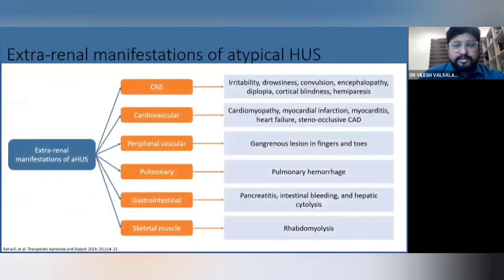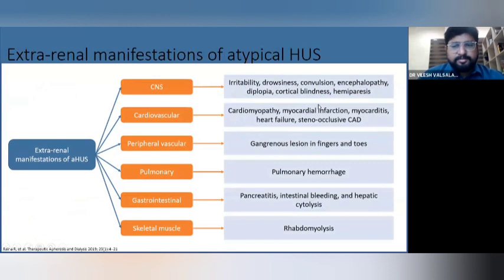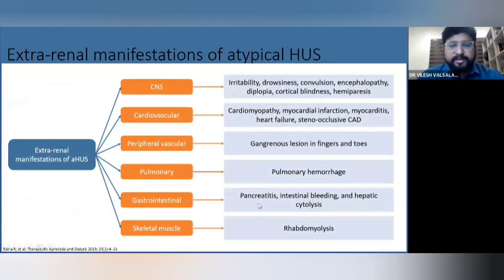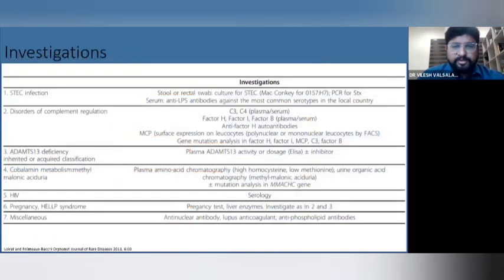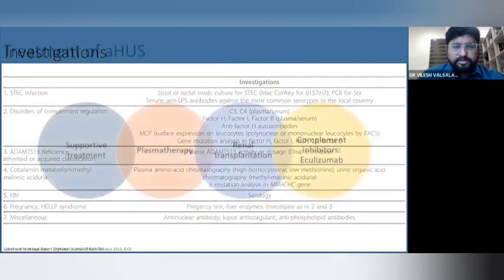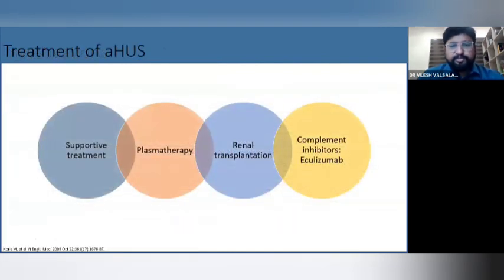Extra-renal manifestations in atypical HUS include neurological symptoms of irritability, drowsiness, convulsions, and hemiparesis; cardiovascular symptoms of MI, myocarditis, and peripheral vascular disease with gangrenous lesions of the fingers and toes; pulmonary hemorrhage; abdominal pain, pancreatitis, intestinal bleeding; and rhabdomyolysis. Investigations involve testing all the relevant complement factors. Treatment starts with supportive measures, then plasmapheresis, renal transplant, and complement inhibitors. Eculizumab is used in treatment, with 5-year data proving it is safe with no new safety concerns for adults and pediatric populations with atypical HUS.